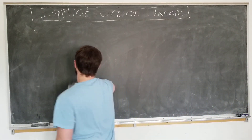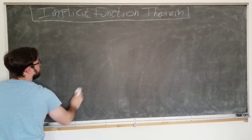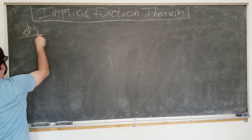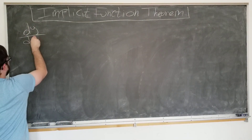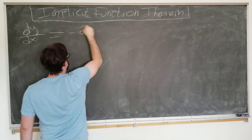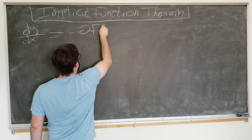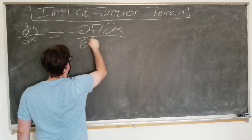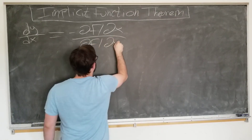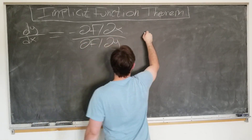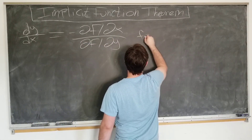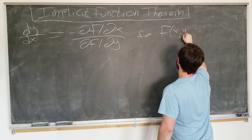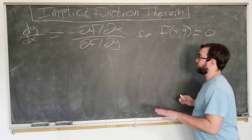Let's apply this to a specific example. We just showed that dy/dx is equal to minus ∂f/∂x over ∂f/∂y for some function f(x, y) equals zero. But that's pretty abstract.